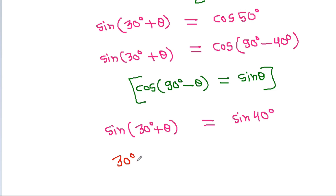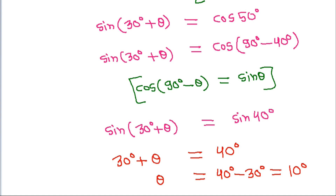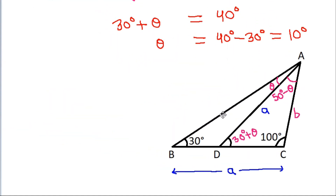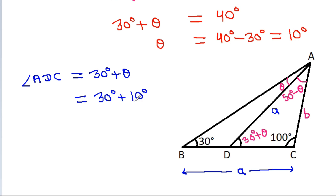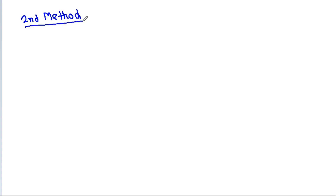So sin of 30 degrees plus theta equals cos 50 degrees. And cos 50 degrees equals cos of 90 degrees minus 40 degrees, and cos 90 minus theta equals sin theta. So sin of 30 degrees plus theta equals sin 40 degrees. Therefore 30 degrees plus theta equals 40 degrees, meaning theta equals 10 degrees. And angle ADC equals 30 degrees plus theta equals 40 degrees.